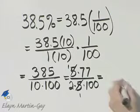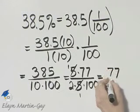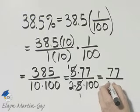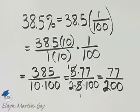So, in the numerator, one times seventy-seven, which is seventy-seven. In the denominator, two times one hundred, which is two hundred. So, what is my ending result? Seventy-seven over two hundred, and that is the fraction equivalent of this percent.